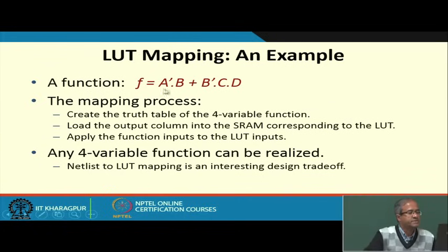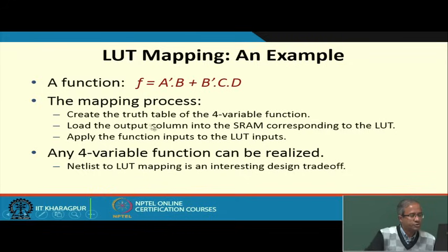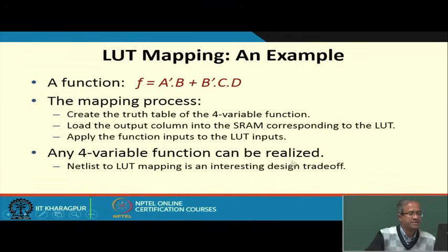If you are given any arbitrary function of 4 variables, the mapping of this function to a LUT is very simple: you create the truth table of this function and load the output column of the truth table into the static RAM corresponding to the LUT. Once you have done that, your LUT implements this function — nothing else to be done. The point to note is that any 4-variable function can be realized. Netlist-to-LUT mapping is very interesting.